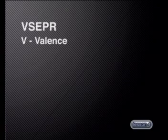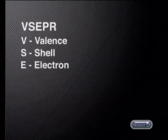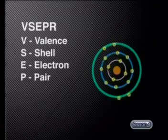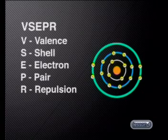Now, I know you must be quite curious to find out what VSEPR stands for. Well, here goes. VSEPR stands for: V for valence, S for shell, E for electron, P for pair, and R for repulsion. Valence, shell, electron, pair, repulsion.